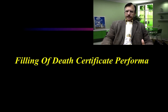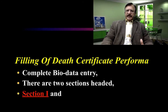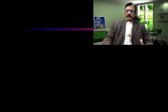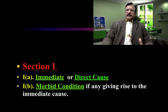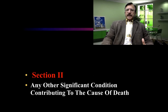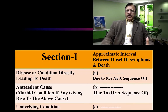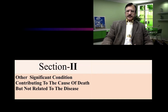Filling in the death certificate requires complete bio-data entry. There are two sections: Section 1 and Section 2. In Section 1, sub-section 1A contains the immediate or direct cause of death; 1B contains any morbid condition giving rise to the immediate cause; and 1C contains any antecedent or underlying condition that contributed to the cause of death. In Section 2, any other significant condition that contributed to the cause of death is written. This is the proforma.